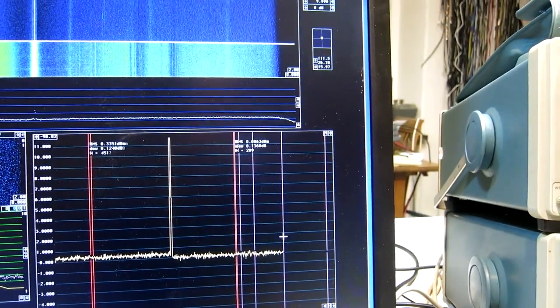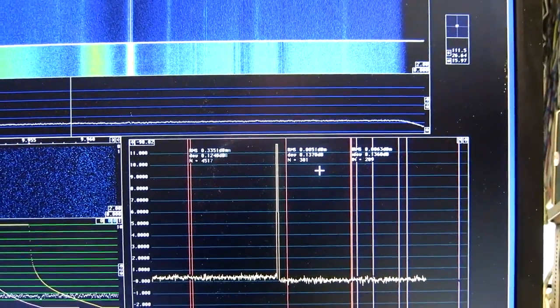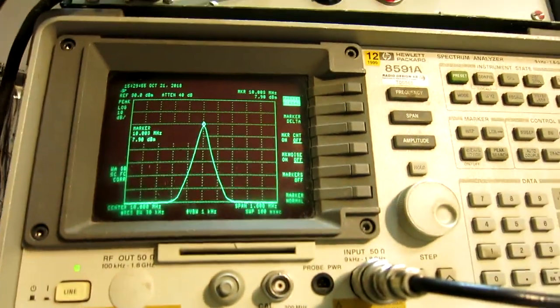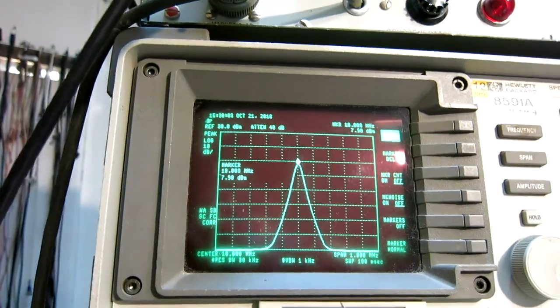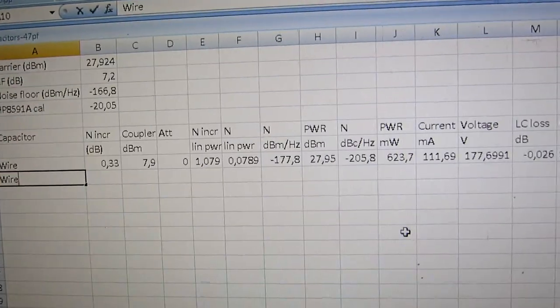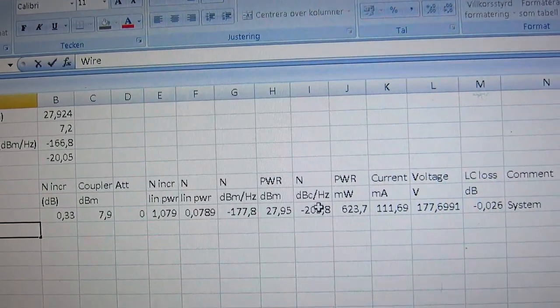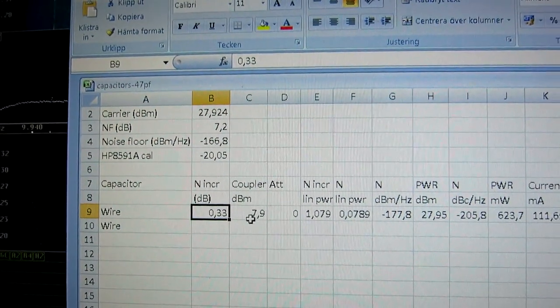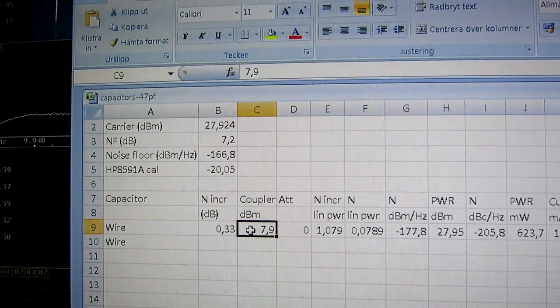The noise increase is 0.32 dB. Or I go for a wider range. And then I would say 0.33 dB. And I remove the attenuation and see that the power is 7.9 dBm. I feed the number into this spreadsheet. And then I find that the noise is minus 206 dBc per hertz. The noise increment here. The signal I find on the coupler.